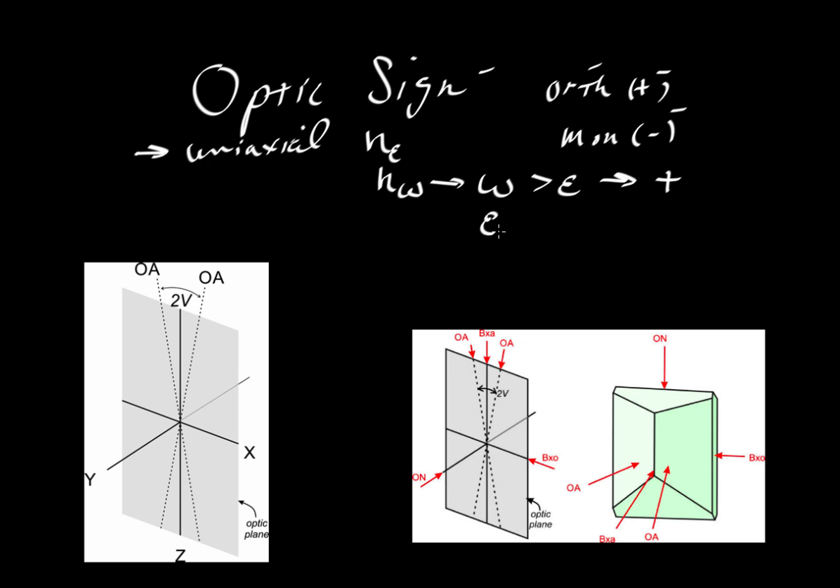If, on the other hand, epsilon is greater than omega, then we say the mineral is negative. That's how we decide positive and negative in uniaxial minerals.